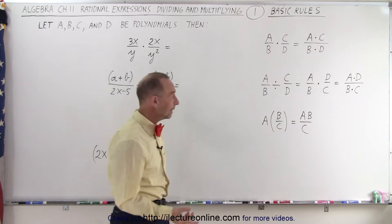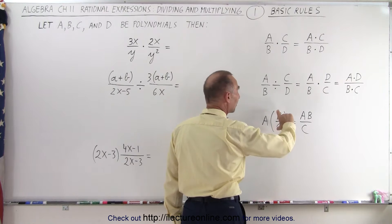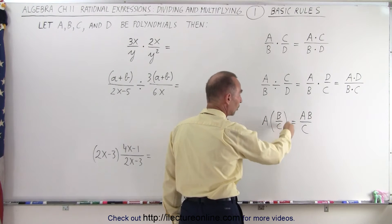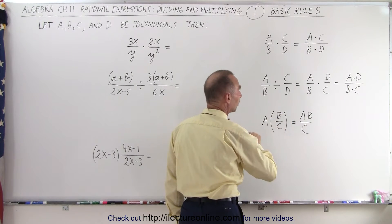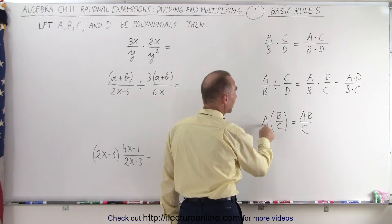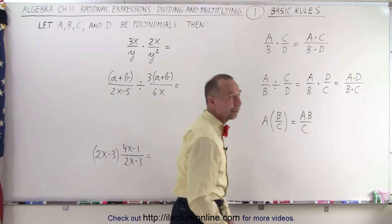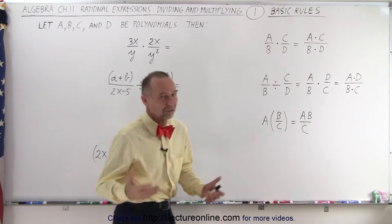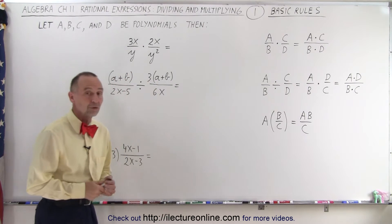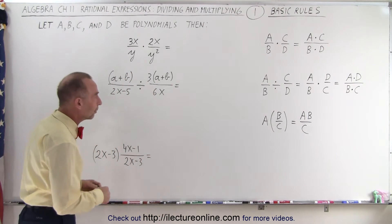And if we have one polynomial multiplied times another rational expression with polynomials, we can simply take a times b in the numerator and c in the denominator. So it works exactly the same as it does for numbers or for variables.